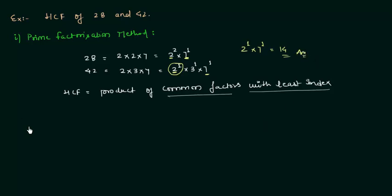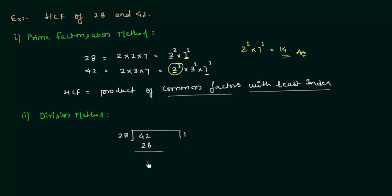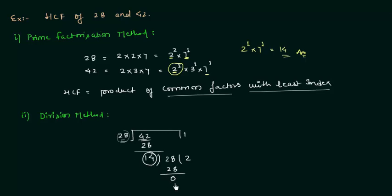Now we will move to the second method: the division method. We have 42 and I will divide 42 by 28. This gives 1 remainder 14. Now I divide 28 by 14, giving 2 remainder 0. So 14 is the HCF of 42 and 28. The rule: divide the larger number by the smaller one, then divide by the remainder, and repeat until the remainder is 0. The divisor at that point is the HCF.